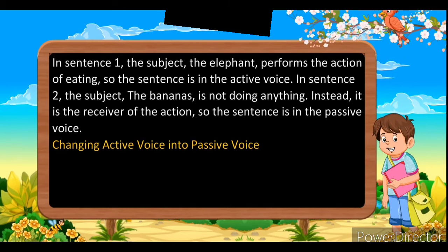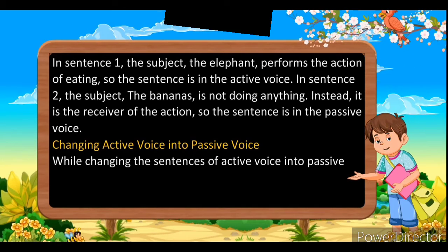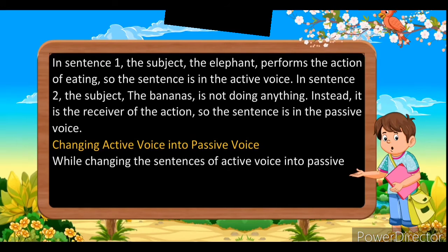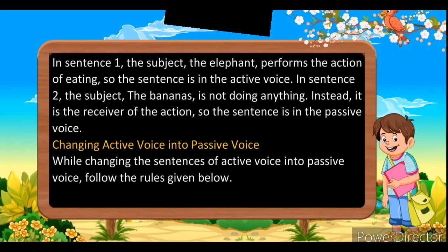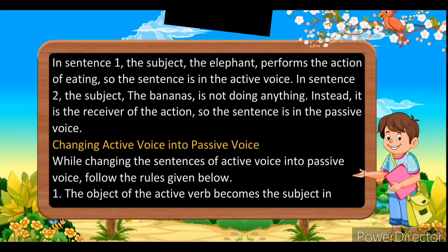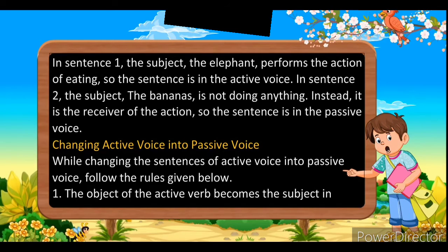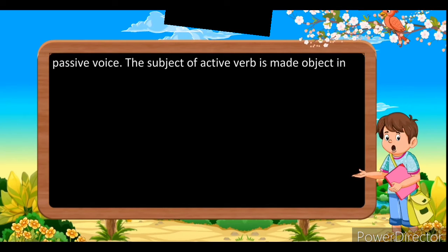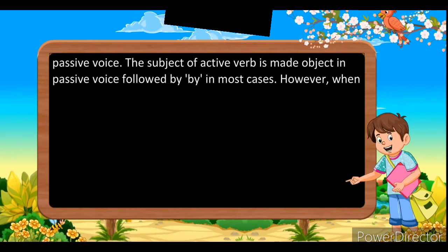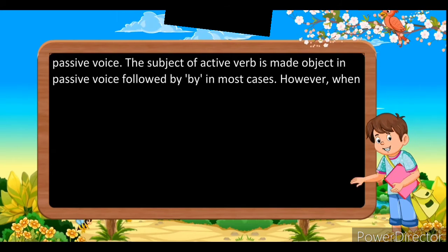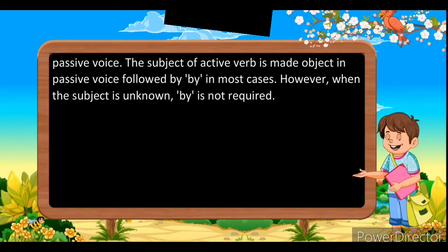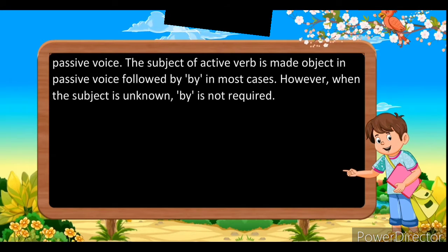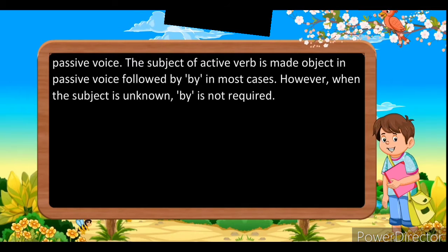Now, how to change active voice into passive voice? While changing a sentence from active voice into passive voice, follow the rules given below. The object of the active verb becomes the subject in passive voice. The subject of an active voice is made the object in passive voice, followed by 'by' in most cases. However, when the subject is unknown, 'by' is not required.